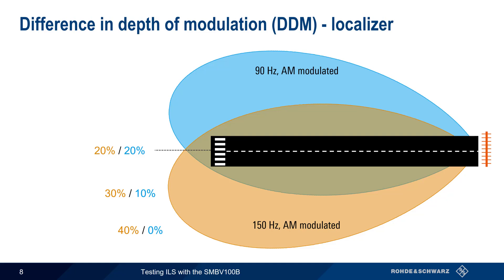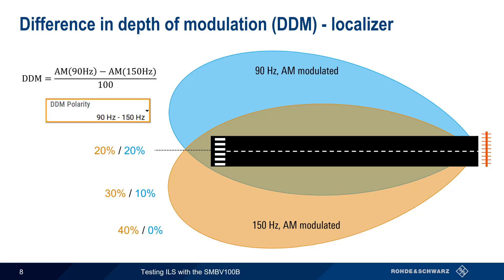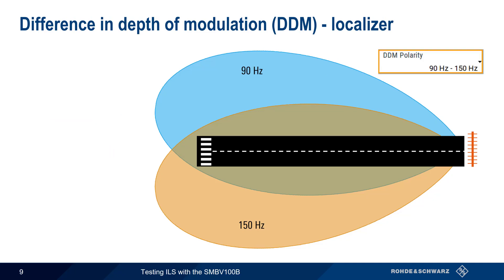The localizer determines the position deviation from the centerline using this difference in depth of modulation between the two lobes. Mathematically, DDM equals the measured 90 hertz AM modulation depth minus the measured 150 hertz AM modulation depth, divided by 100. The order of the terms in the numerator – that is, which number is subtracted from the other – is defined by the DDM polarity. An aircraft exactly centered on the runway centerline will see the same AM modulation depth on both lobes, and DDM will be zero.